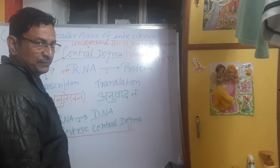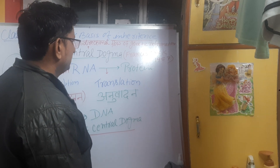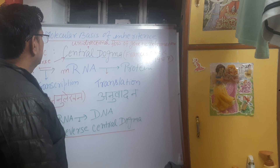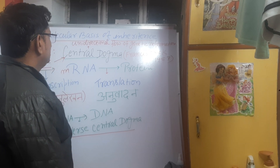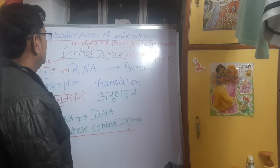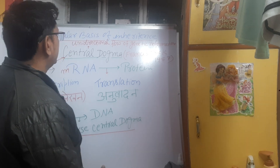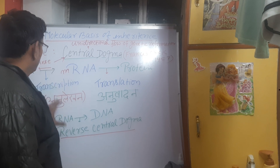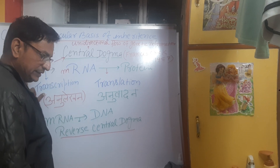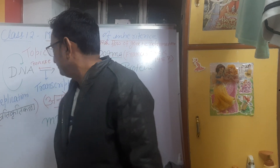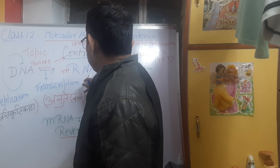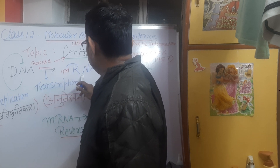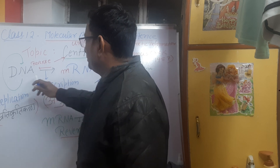Central Dogma was given by Francis Crick in 1957. It states that the flow of genetic information is unidirectional. DNA — deoxyribose nucleic acid, which is double-stranded — is converted to RNA, ribose nucleic acid, which is single-stranded, and then to protein. From DNA, mRNA is formed; from mRNA, protein is formed.